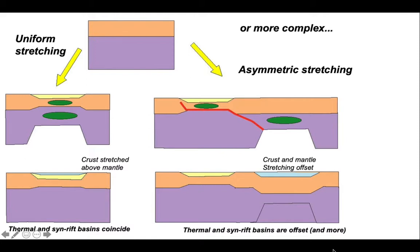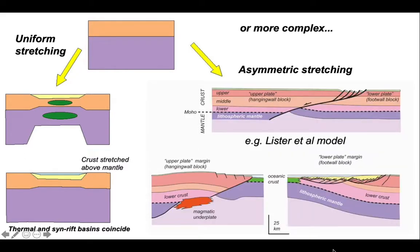Therefore, the syn-rift basin and the post-rift thermal subsidence basin coincide one on top of the other. The asymmetric stretching model suggests that the crust and the mantle lithosphere stretch in different places. Therefore, after the process has concluded, the thermal subsidence basin is offset from the syn-rift basin.